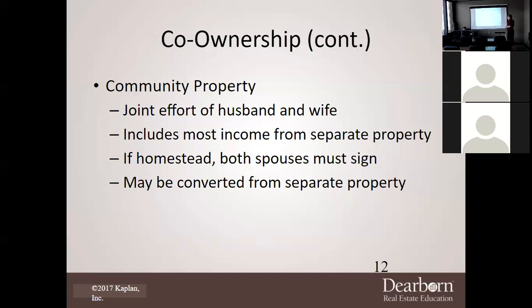Community property is a joint effort of husband and wife and includes most income from separate property. If it's homestead, both spouses must sign. It may be converted from separate property. If you inherit land and it is put in your name, it is separate property. But the minute you put your wife on that title, it becomes community property and she has 50% interest. You can hold things you inherit separately for the remainder of your life — just because you inherit something does not automatically mean the other spouse gets 50% interest.